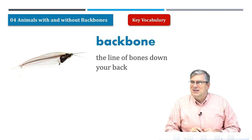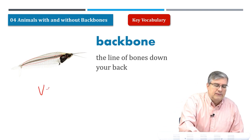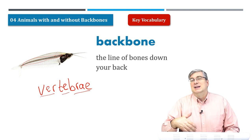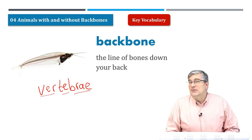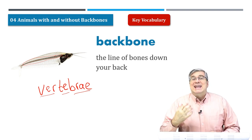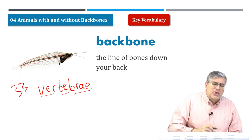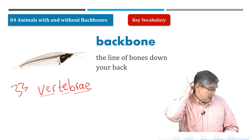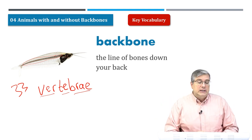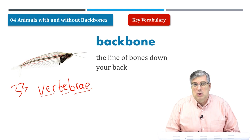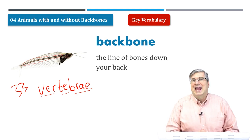These little bones are called vertebrae — that's a more scientific or medical word. Most people just say backbone, but it's not one bone; it's many. In humans, we have 33 vertebrae connected by tissue in our back, from our neck all the way to the bottom. Other bones like your ribs come out from the backbone, making it very important for us and many animals.